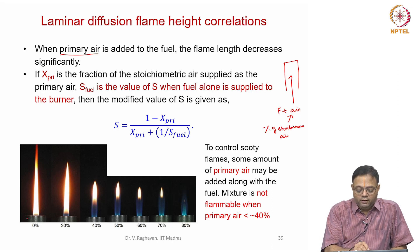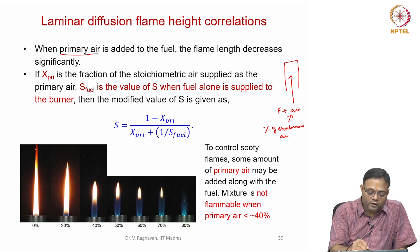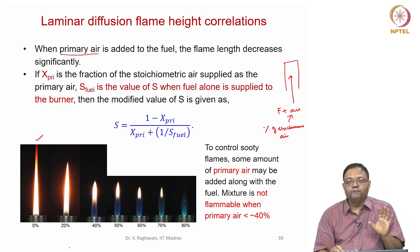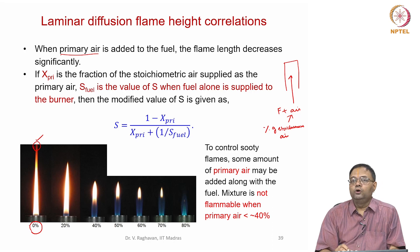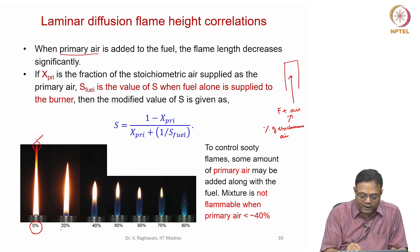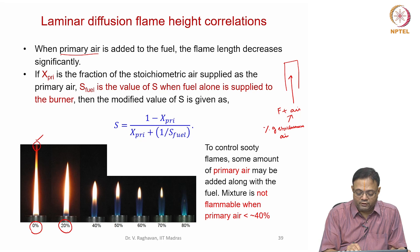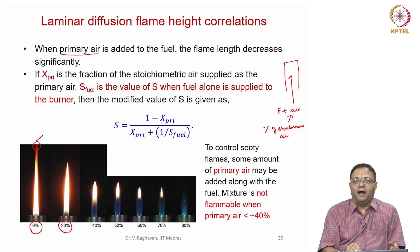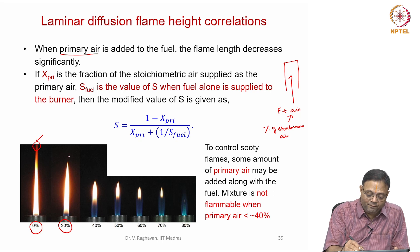These photographs illustrate what happens when you add more and more air to the fuel stream. The first case shows a given fuel flow rate above the smoke point — visible smoke appears with 0 percent primary air. When I supply 20 percent of the stoichiometric air along with the fuel, the smoke disappears and the flame length is reduced.